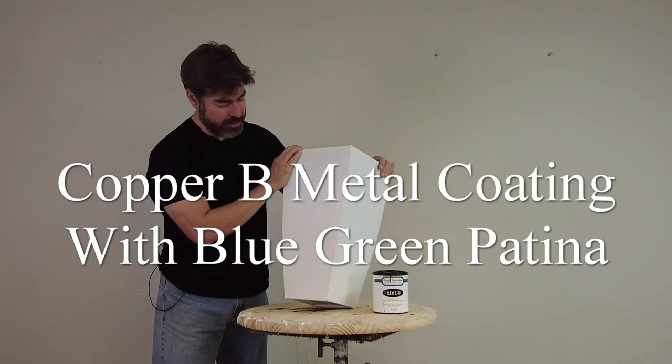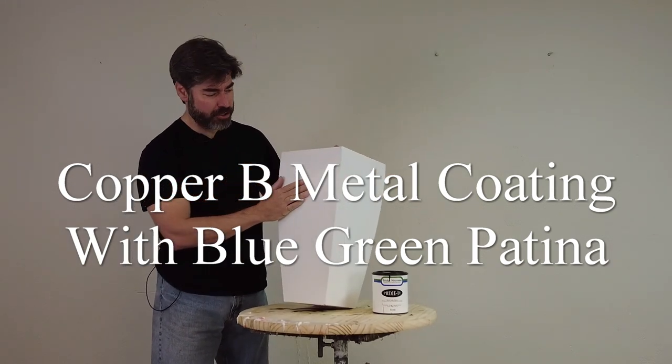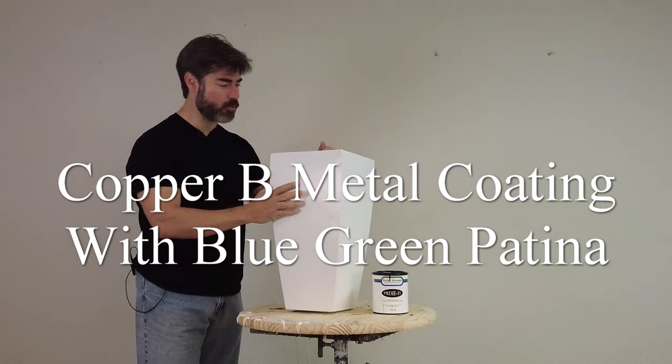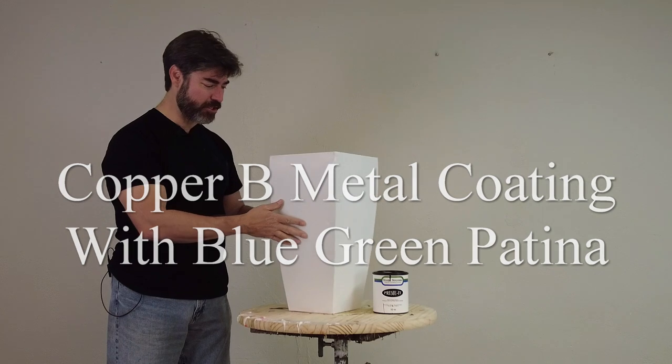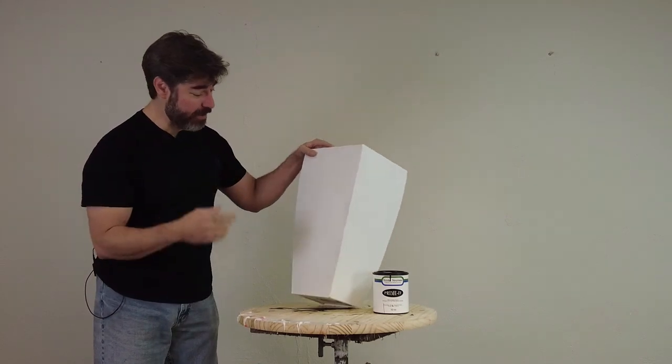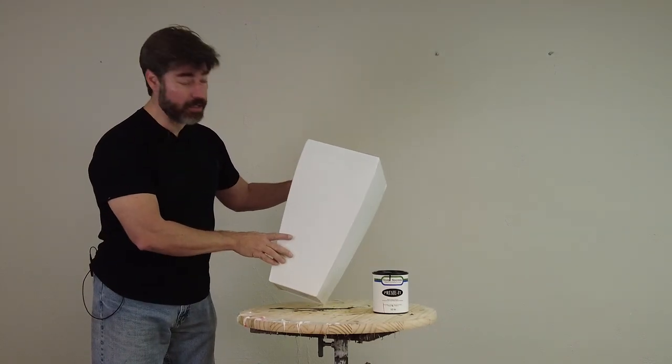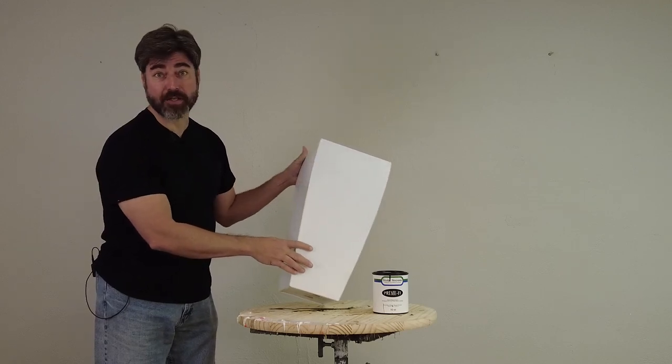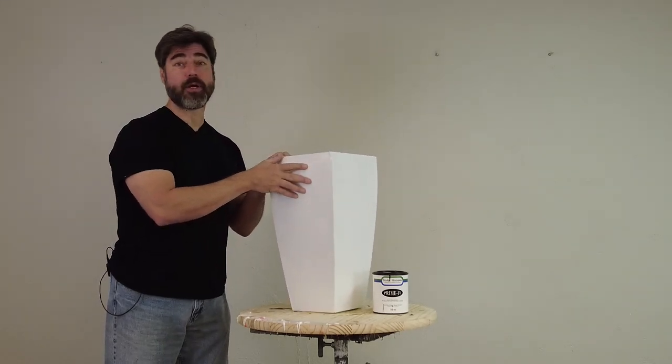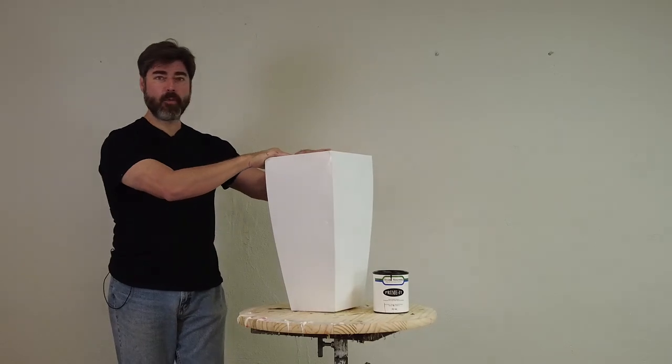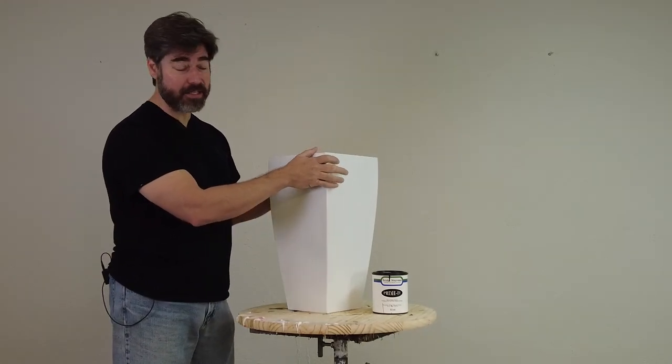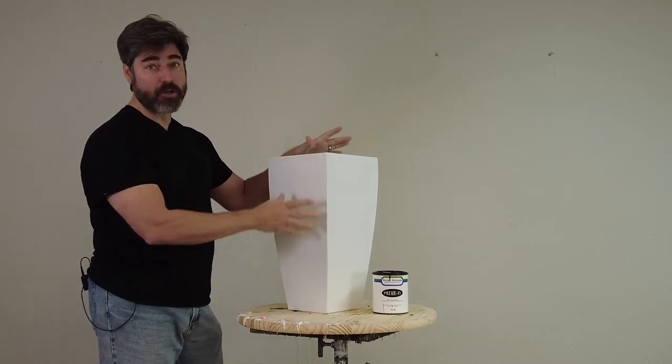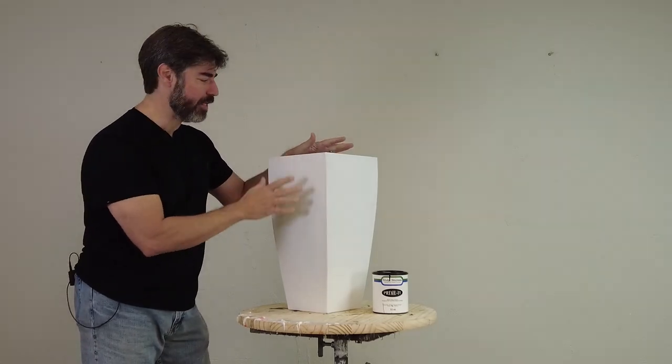I lucked into some cheap sheet metal planters. One of my neighbors was about to throw these away because some were damaged, and my little monkey brain immediately went to: hey, this looks like a Sculpt Nouveau project. So in this video we're going to walk through the steps of how to take a piece like this and put a metal coating and patina on it.